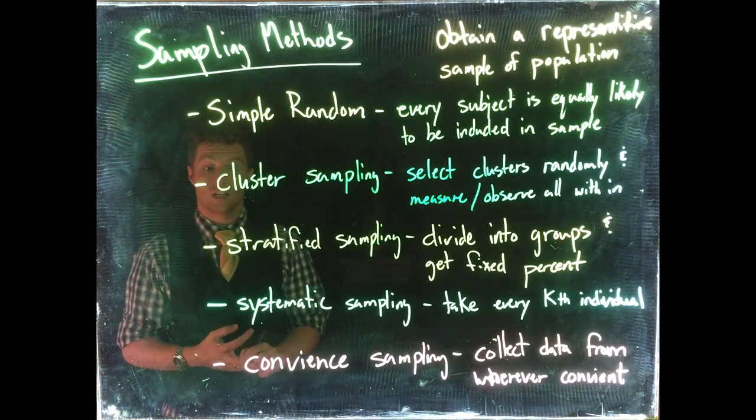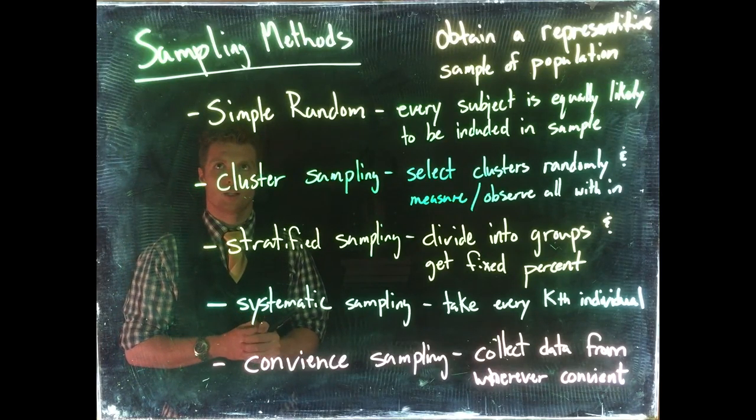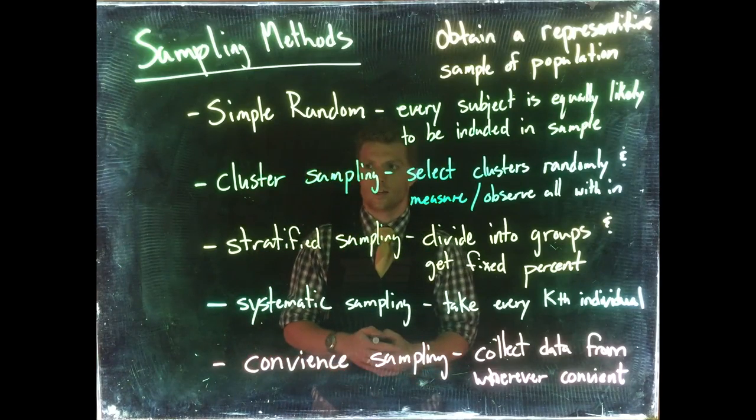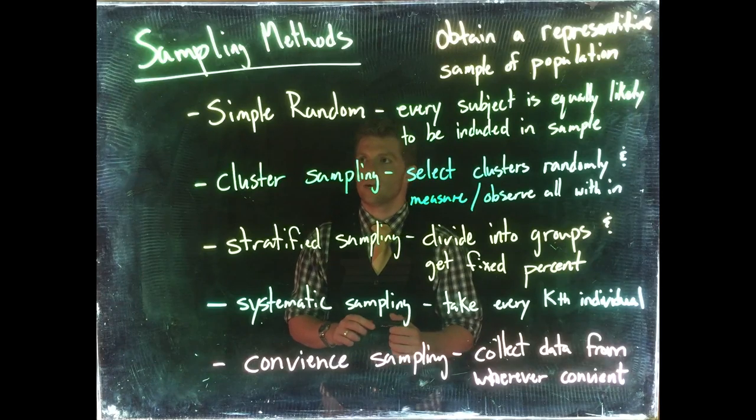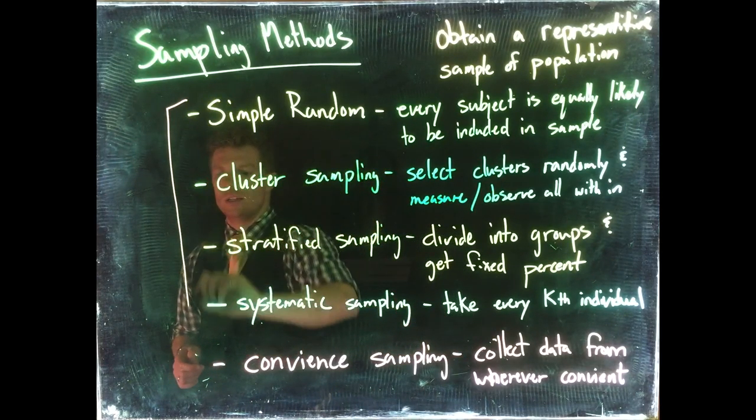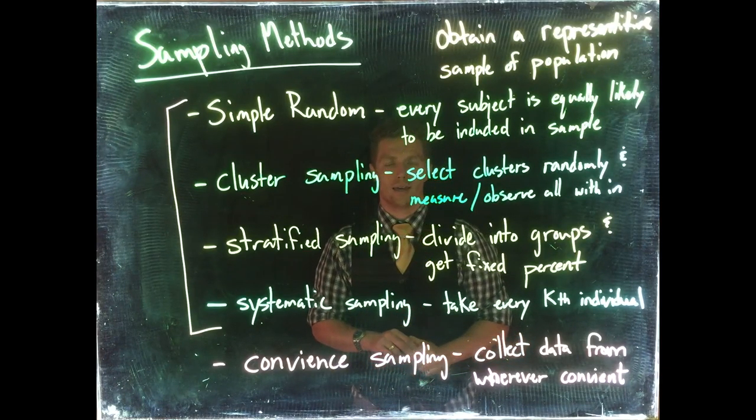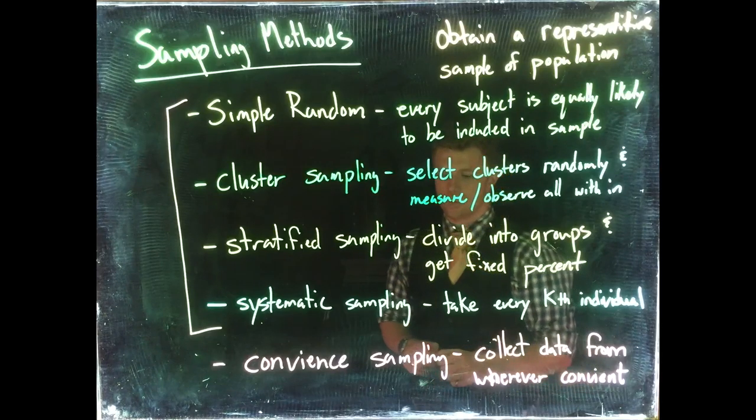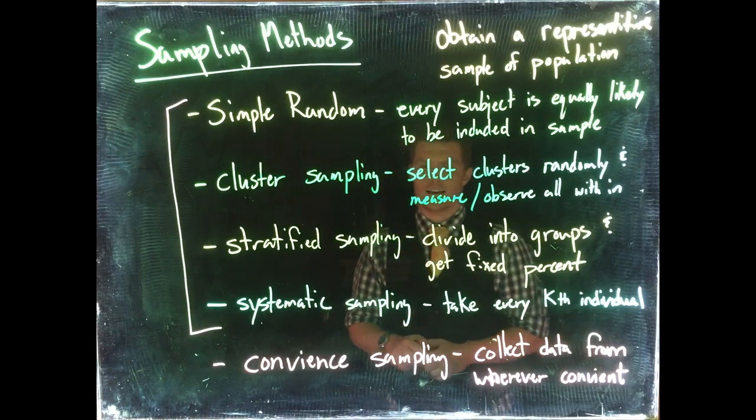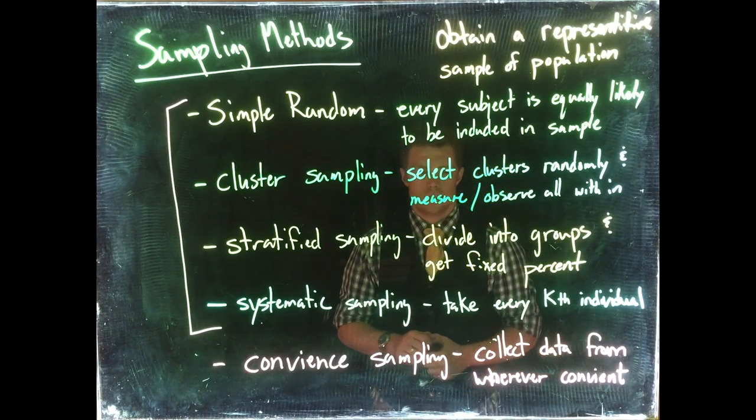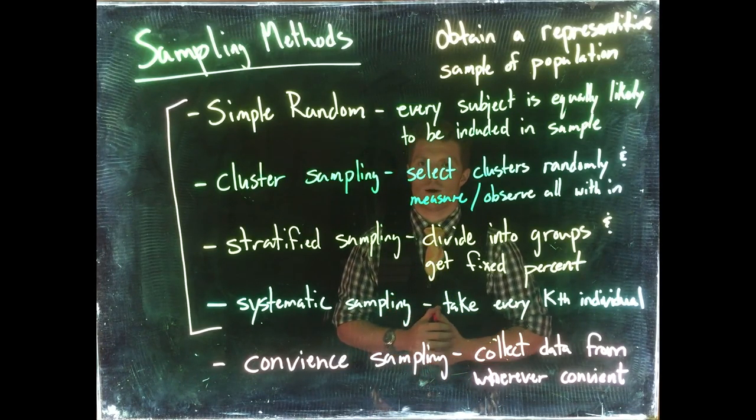Overall, there are many different ways that we can do sampling. Here are some examples: these four can be good to help us get a representative sample, and convenience sampling is a poor way to get a representative sample. It was actually convenience sampling that really hampered that Literary Digest poll, because convenience sampling rarely makes a representative sample of your population.